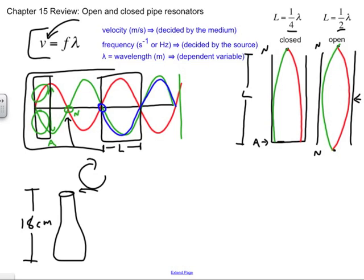That doesn't make an open pipe. If you have one closed end like I do down here, you are a closed pipe resonator. You have to have both ends open to be an open pipe. This is a closed pipe resonator that is 18 centimeters. When I blow over the top of this, what sort of sound will I get out? What frequency, what's the pitch of the sound?